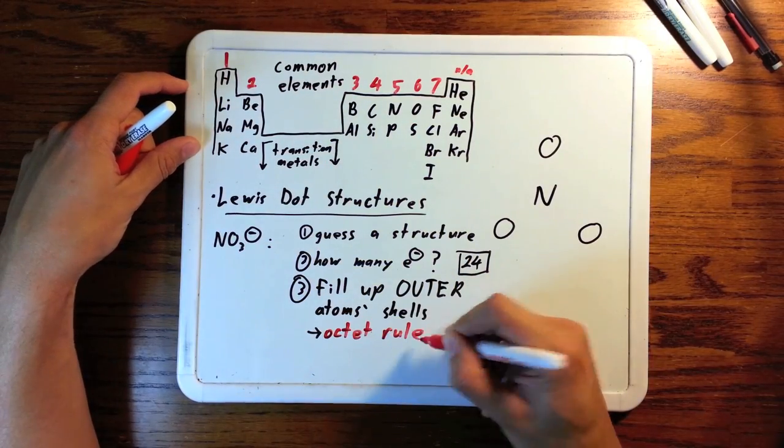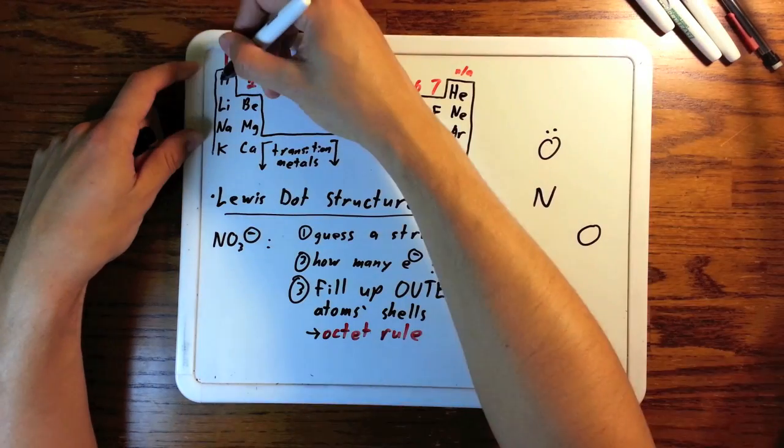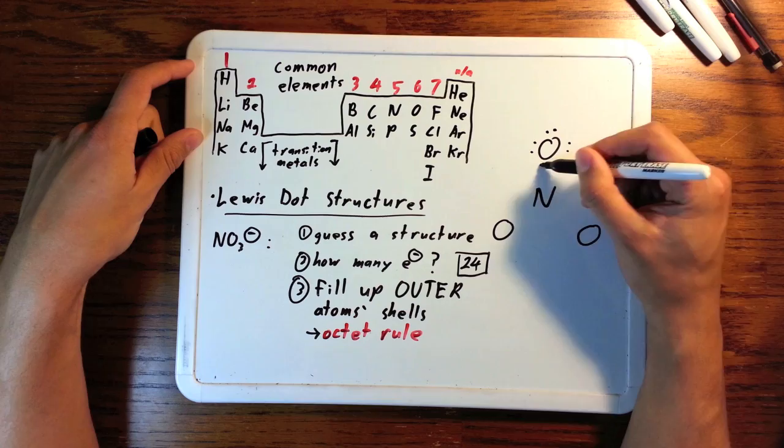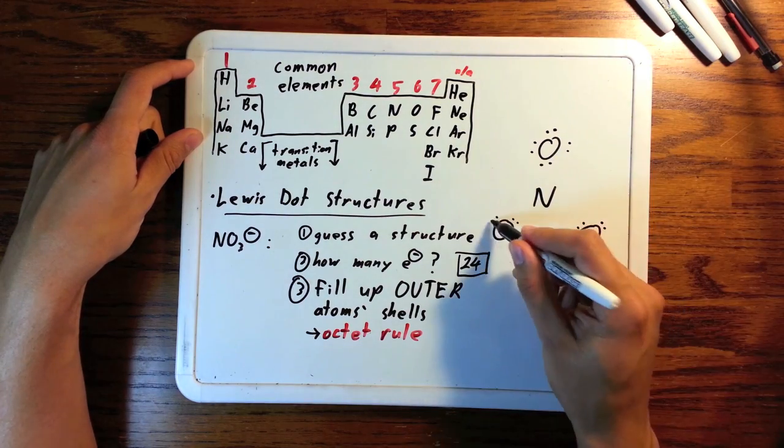So, we have 3 atoms on the outside, and 24 electrons to use. That fills them all up perfectly, fills up their valence shells perfectly, with none left over.